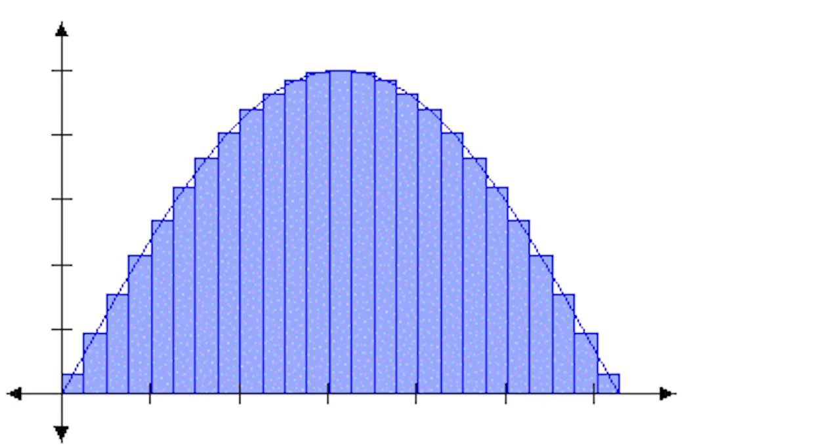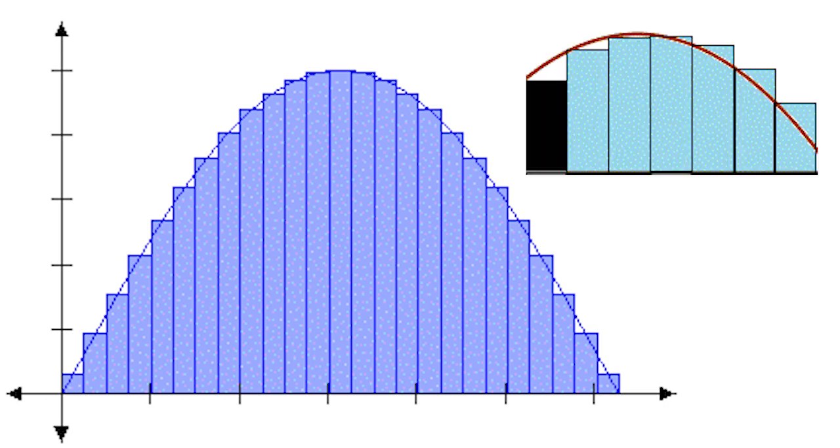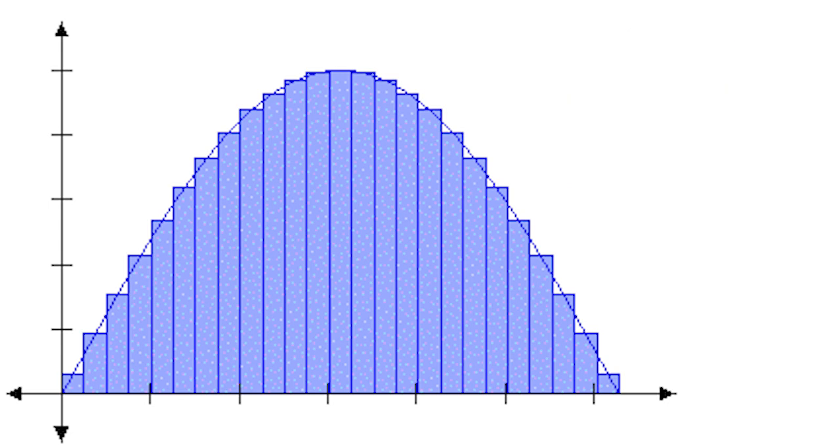Here, what we will do is divide the area into n equal parts and draw rectangles. From the graph, we can see that the rectangles overshoot or undershoot the curve. To calculate the area of the curve, we will have to divide the region into infinite parts.